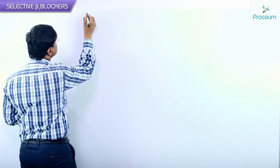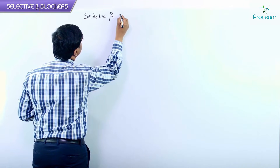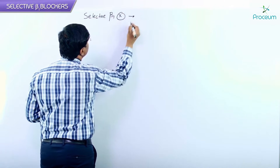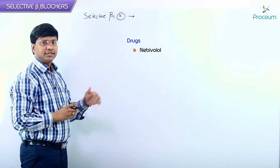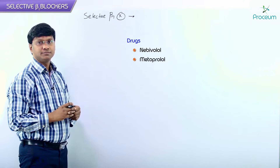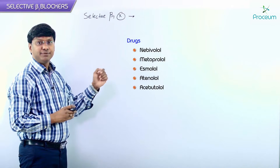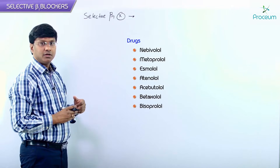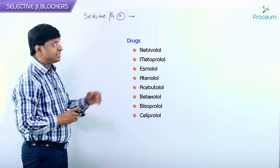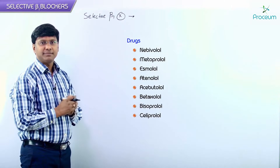Of the beta blockers, if you take the selective beta-1 blockers, they include nebivolol, metoprolol, esmolol, atenolol, acebutolol, betaxolol, bisoprolol, and seliprolol. These are the selective beta-1 blockers.